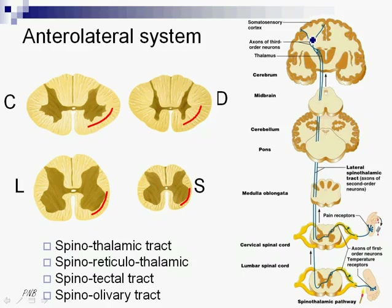Now, the spinal reticular thalamic tract — this can also be called the paleospinothalamic tract, because it is considered more ancient in evolution. This tract is the same as the spinothalamic tract, but it introduces itself into the reticular formation in the brainstem, where it will have one or several synapses, and then continue ascending to the thalamus and again to the cortex. Except that this time the message will be slower, but also more diffuse — it will not be so concrete in specific areas of the somatosensory cortex, but will spread all over the cortex in a diffuse manner.